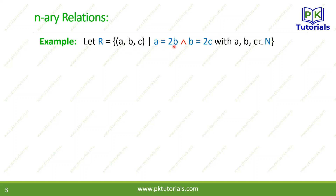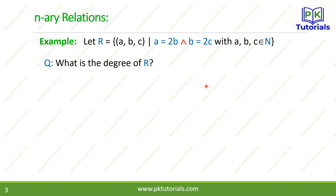We have the condition: a = 2b, and another condition: b = 2c, where a, b, c belong to N (natural numbers). So we have a relation with a first element, second element, and third element — three elements — and this means the domain is N × N × N. We have a relation on the set, so (a, b, c) means N × N × N.